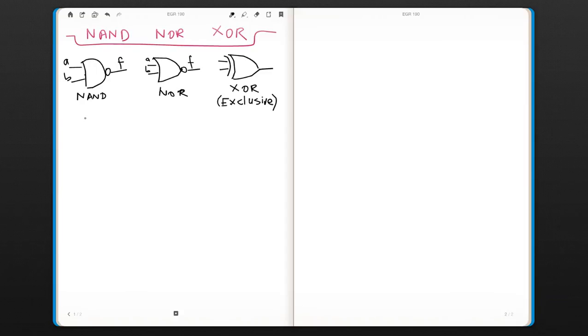So let's develop the truth tables for these functions. These are our inputs for NAND. It's going to be very similar to the operation of AND, but everything is going to be complemented. So the output is going to be 1, 1, 1, 0.